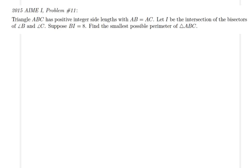Hello everyone, in this lecture we will be solving 2015 AMC I problem number 11. Triangle ABC has positive integer side lengths with AB equal to AC, so we have an isosceles triangle. Let's go ahead and prepare a sketch.